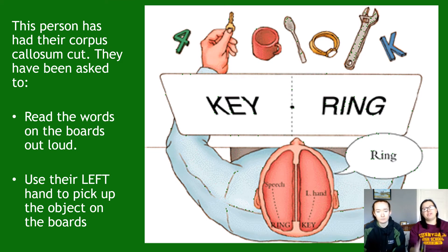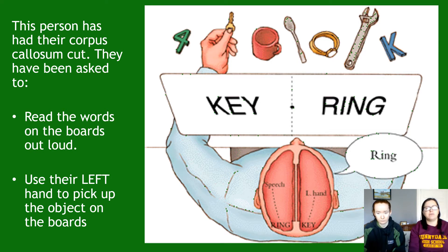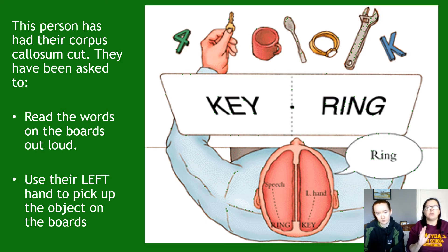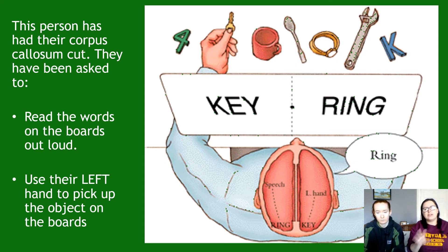In your exam you will get a picture practically identical to this one. This person has had their corpus callosum cut, so there is no join between their two hemispheres. They've been told to read all the words on the board out loud and use their left hand to pick up matching objects. The left eye can only see the word 'key' and the right eye can only see the word 'ring.' However, this person only said the word 'ring' and only picked up a key.